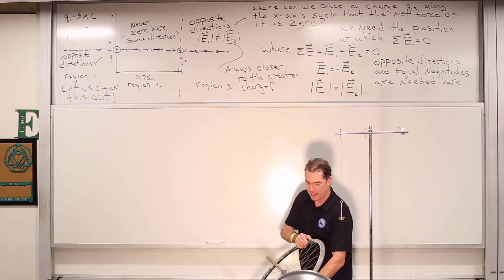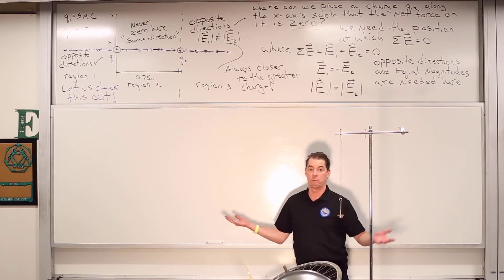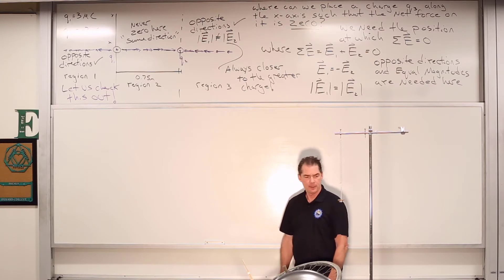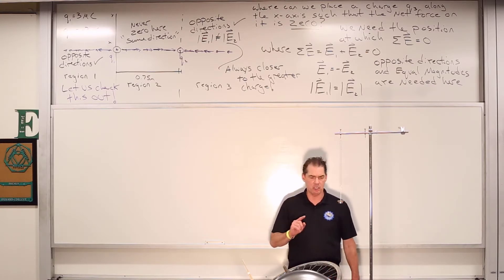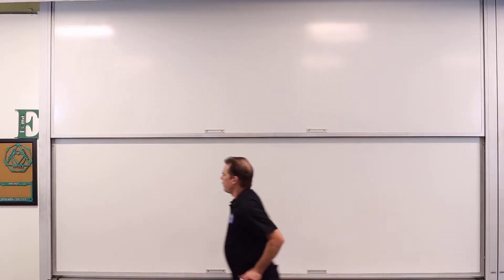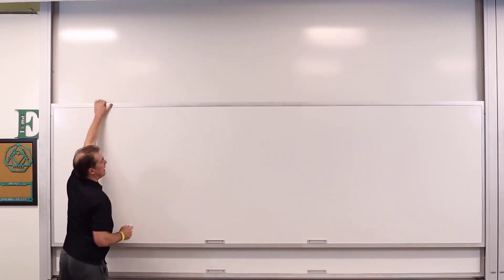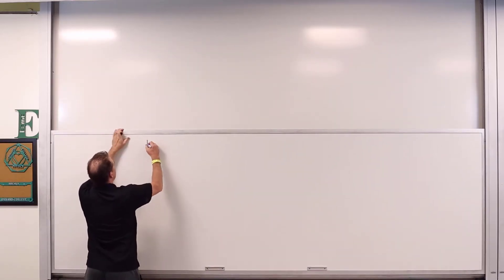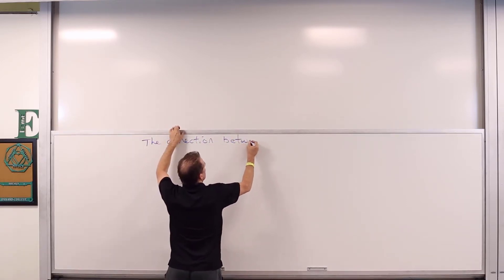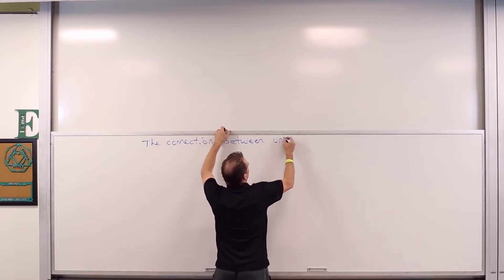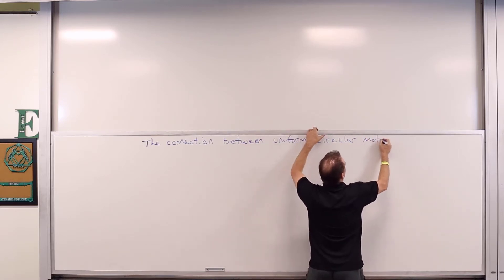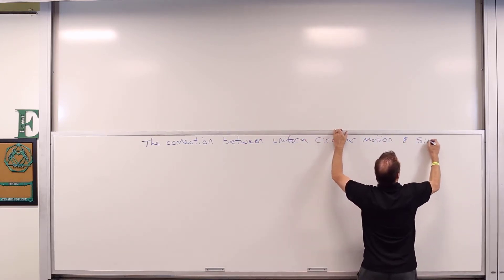We can just use a sinusoidal function in order to describe it. So we'll look a little bit at that. Just give me a second to turn this bright light off. All right, so what do we do? We go back to uniform circular motion and look at the connection between uniform circular motion and simple harmonic motion.